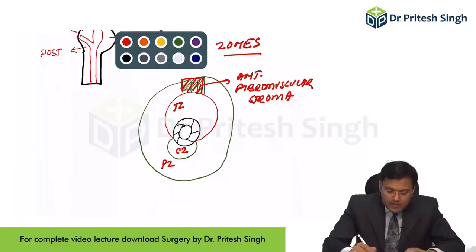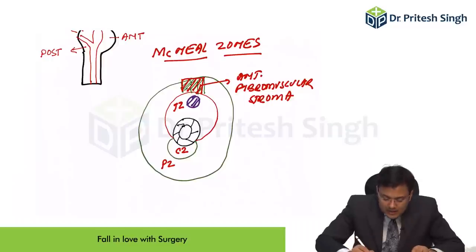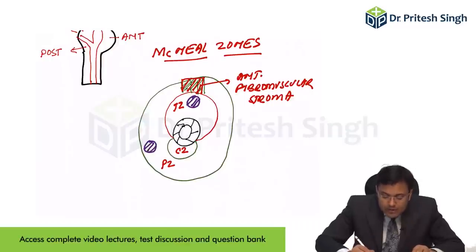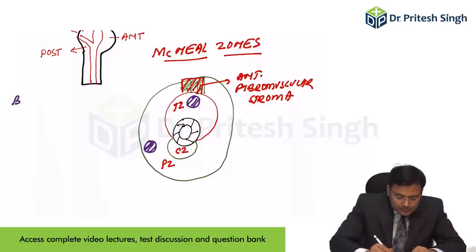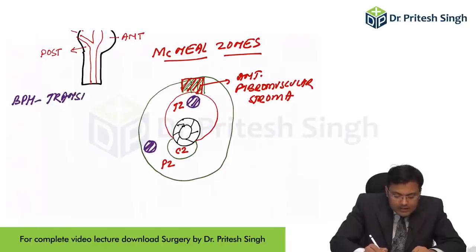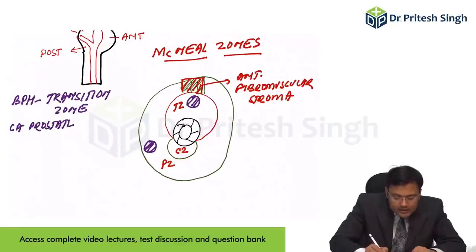BPH is most common in the transition zone, whereas carcinoma prostate is most common in the peripheral zone.